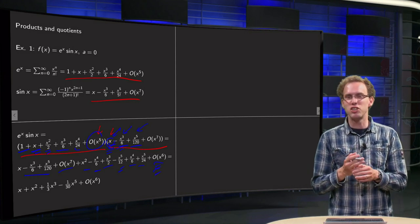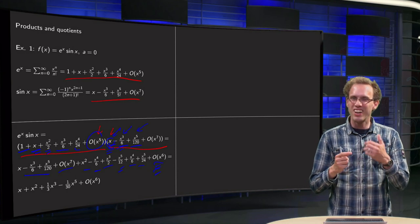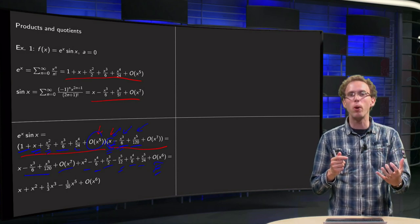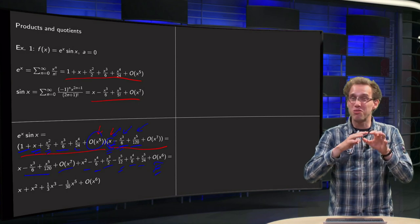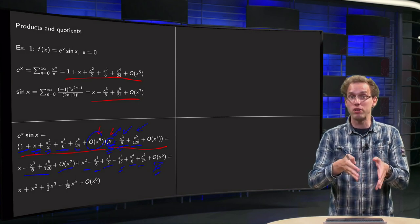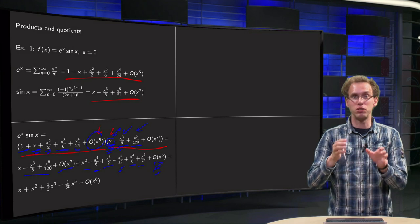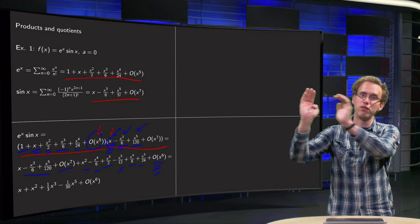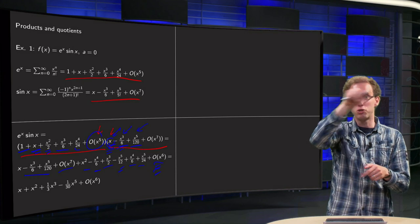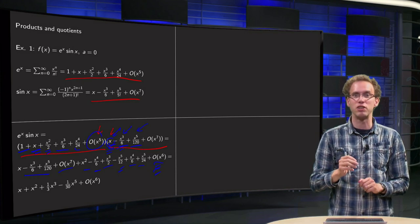Now you also see the strength of those order symbols, because you are really keeping track of what you are throwing away. You really see that you don't forget anything, which is very important in these big products, because you have an infinite number of terms on each side, and just in those cross multiplications you could easily forget some terms.